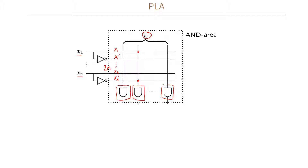This is what is meant by being programmable — we can determine which inputs serve as input to each of the AND gates. So we are free to make terms like X1 and XN' as in this example, but we could also use the combination X1, X2, X4, X6' as another implicant. This is typically freely configurable for the user.